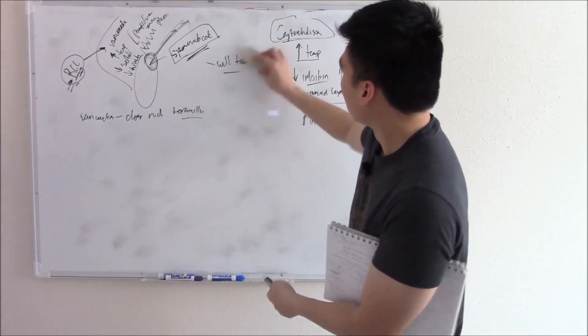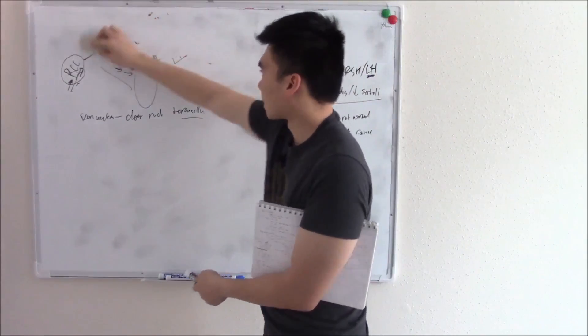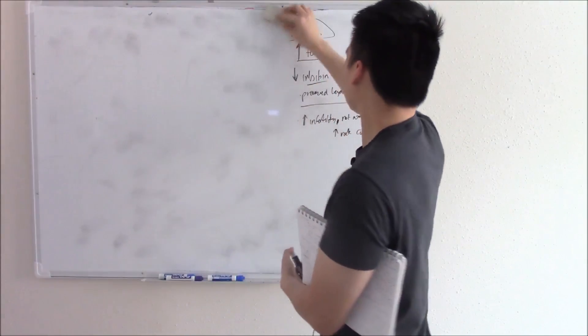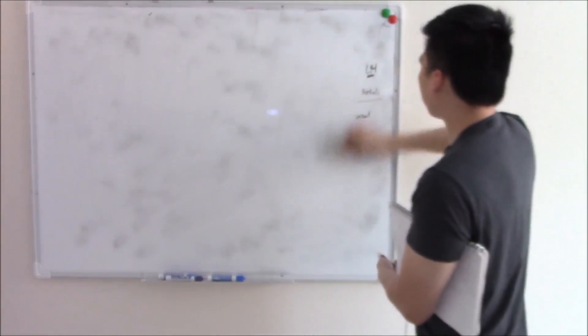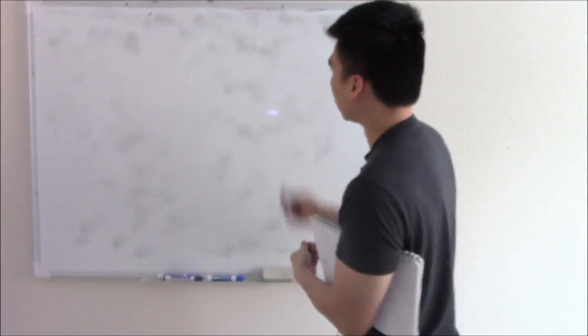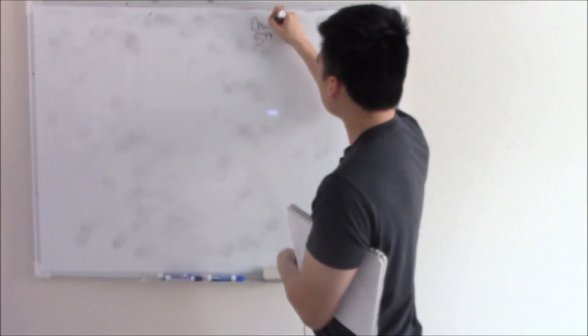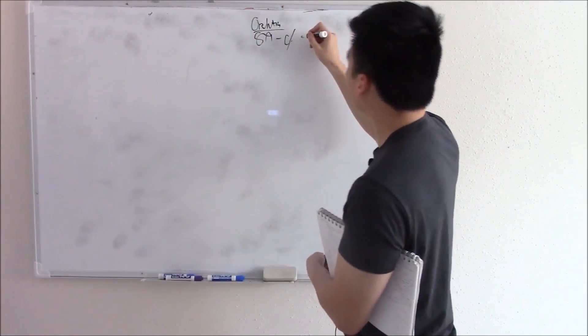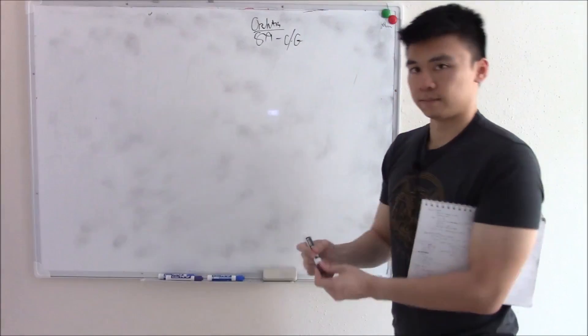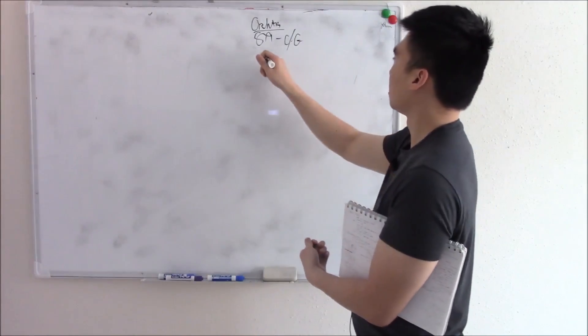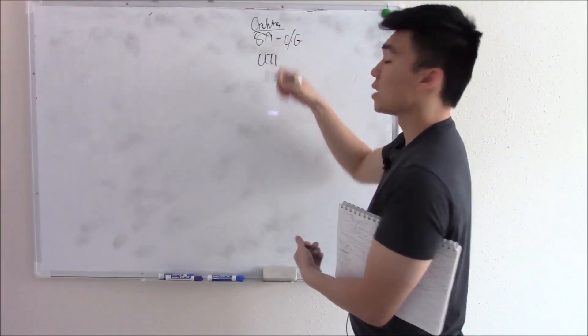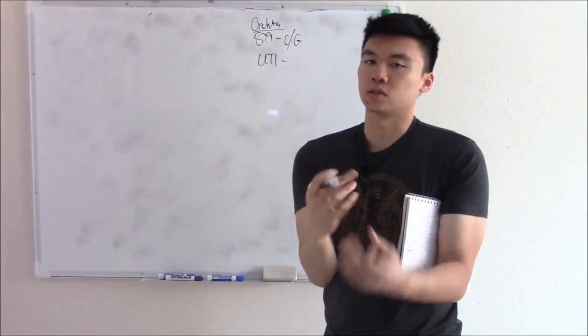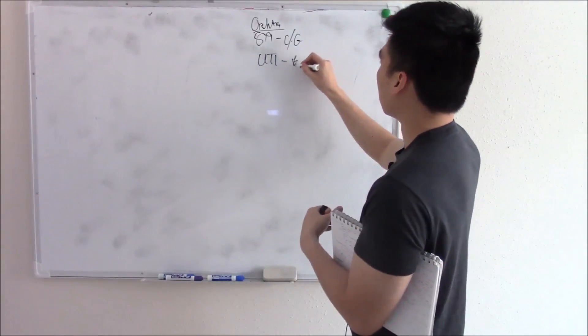Another common testicular pathology that I like to talk about is orchitis or inflammation of the testes. That's what itis means. So orchitis can happen from STIs like chlamydia and gonorrhea. So I'll write orchitis. So STIs like chlamydia, gonorrhea, those are just the common STIs. It can come from a UTI that's spread to your testes. So the most common cause of a UTI, the most common bug, do you remember? That's going to be your E. coli.